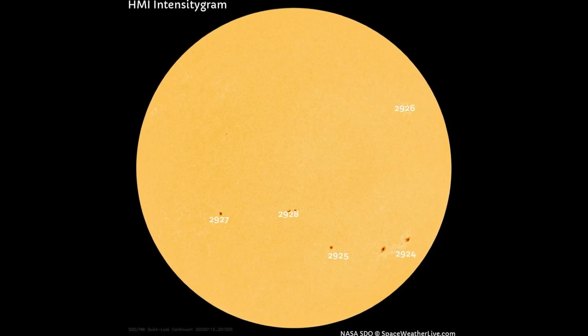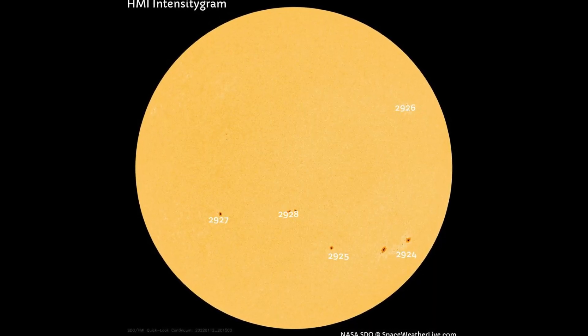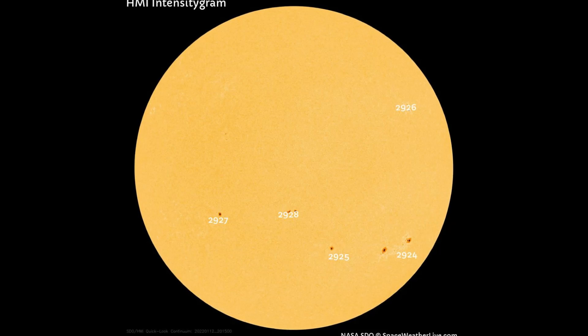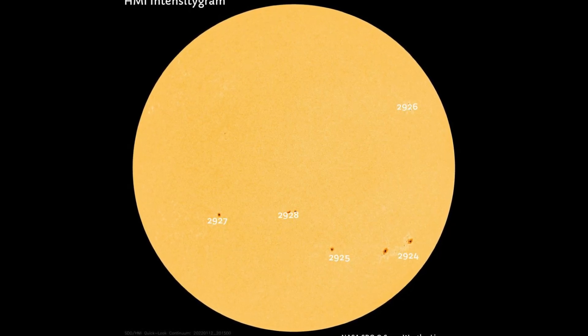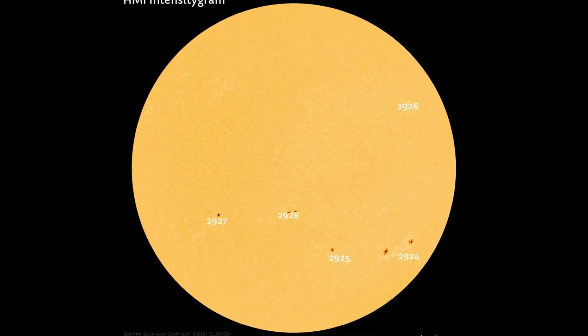Five sunspot regions can be seen on the Earth-facing side of the Sun, shown on this HMI intensity gram map.